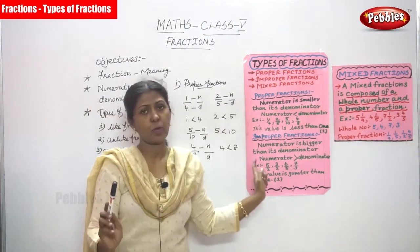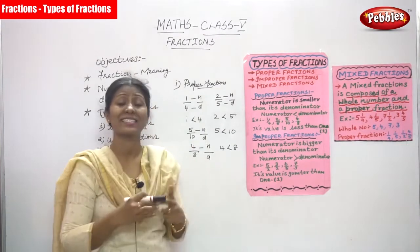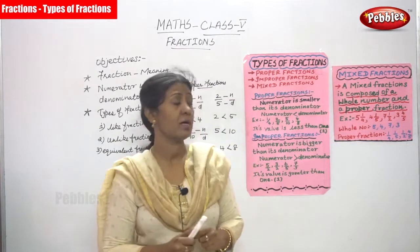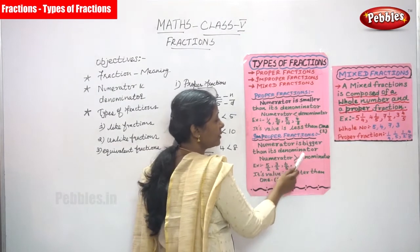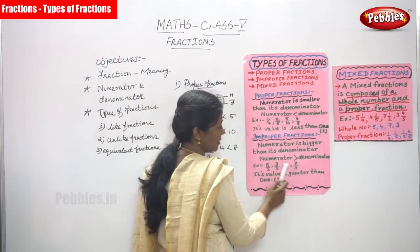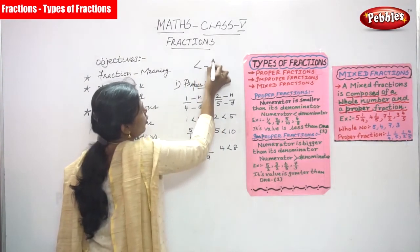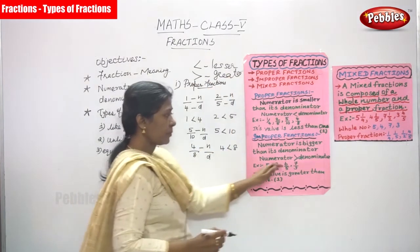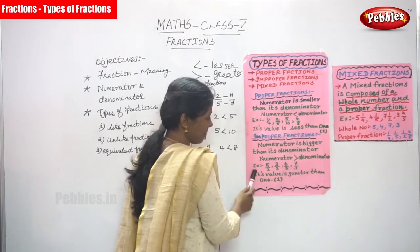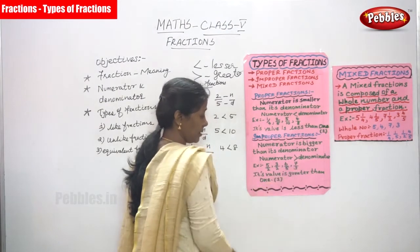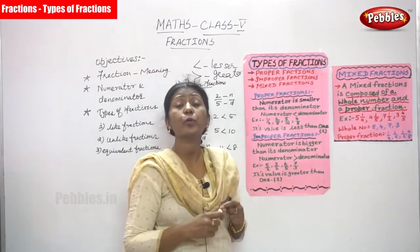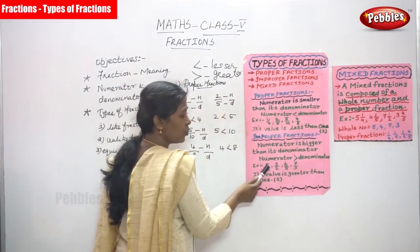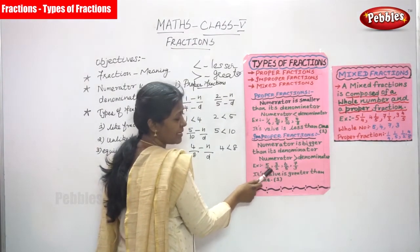Now we move on to improper fraction. Numerator is greater than the denominator — it is called an improper fraction. Numerator is bigger than or greater than its denominator. Examples: 5 by 2, 3 by 2, 6 by 5, 7 by 3. The value of an improper fraction is always greater than 1. For example, 5 by 2 — 5 is the numerator and 2 is the denominator; 5 is greater than 2, so it is an improper fraction.